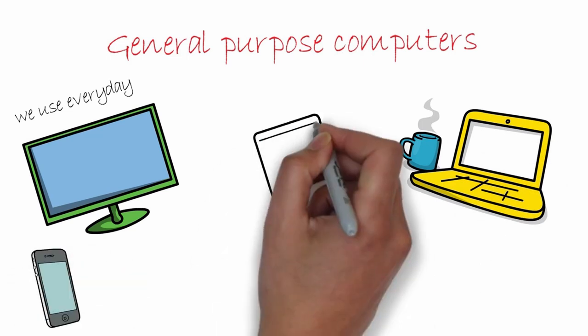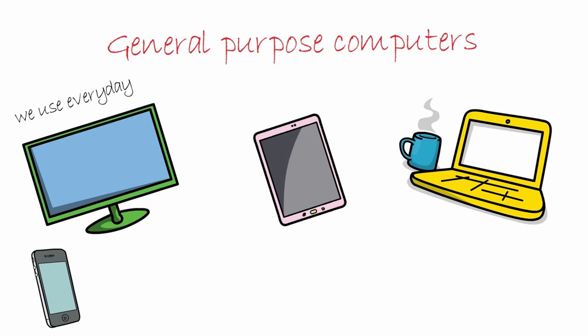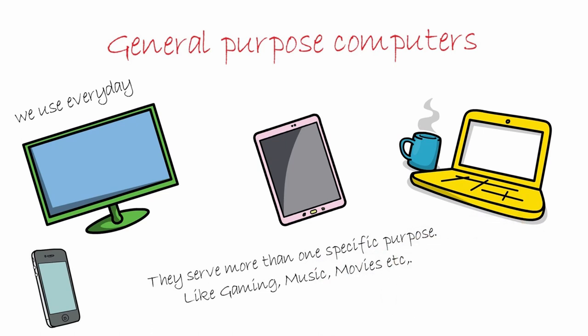Even our smartphones and tablets are more towards the general purpose end of the spectrum, which means they have more than one specific purpose. For example, even though the smartphone's main purpose is communication through emails, text, voice, and videos, they are designed for other purposes like listening to songs, audiobooks, seeing videos, reading ebooks, browsing the internet, gaming, and taking pictures.